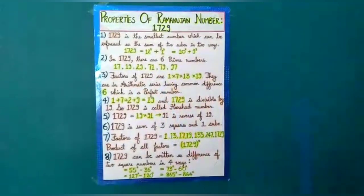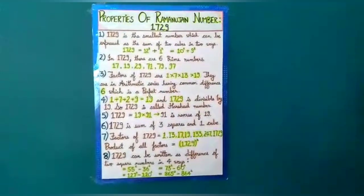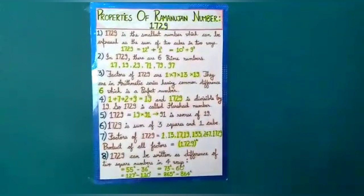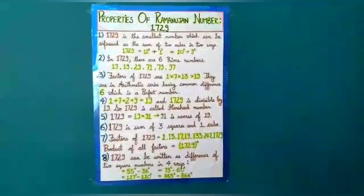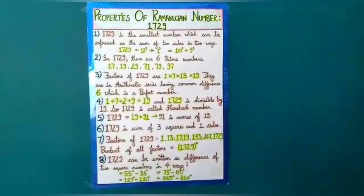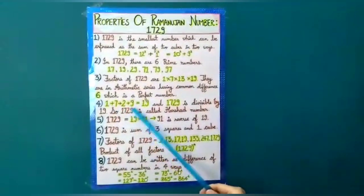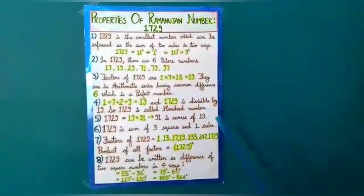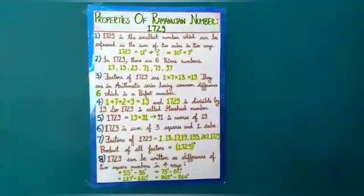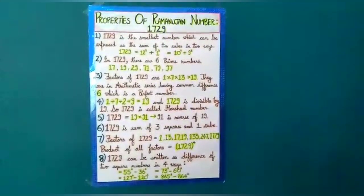Number three is that the factors of 1729 are 1 into 7 into 13 into 19, are in arithmetic series having common difference 6 which is a perfect number. Number four is that the sum of the digits in 1729, that is 1 plus 7 plus 2 plus 9 is 19 and it is divisible by 19. So, it is also called a harshad number.